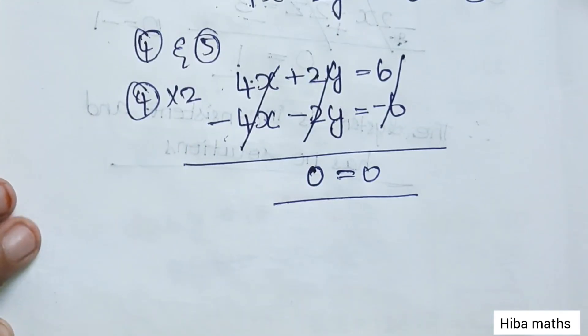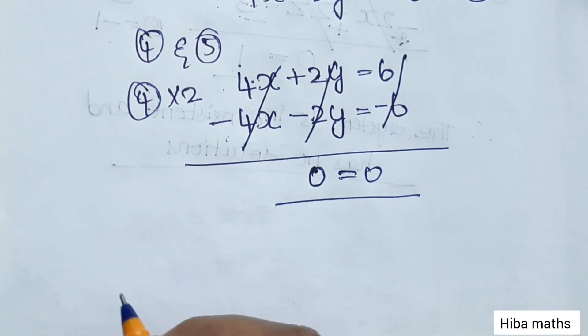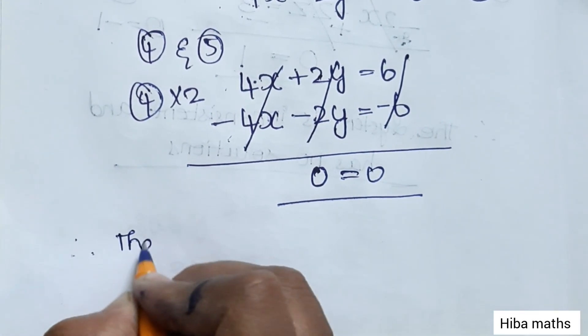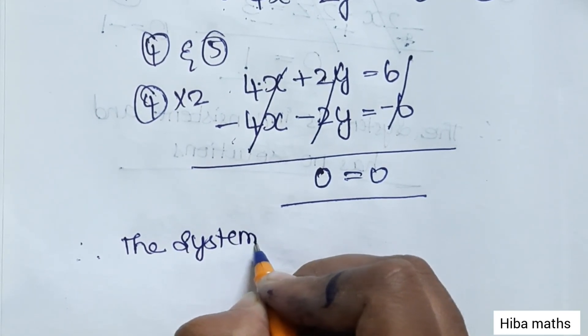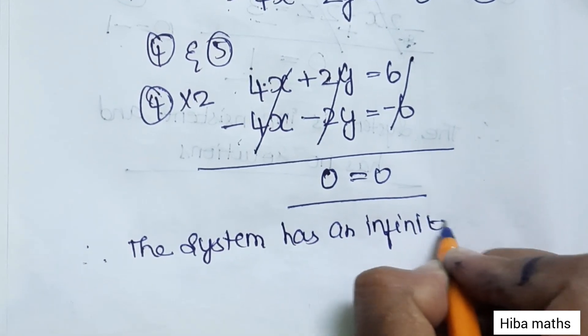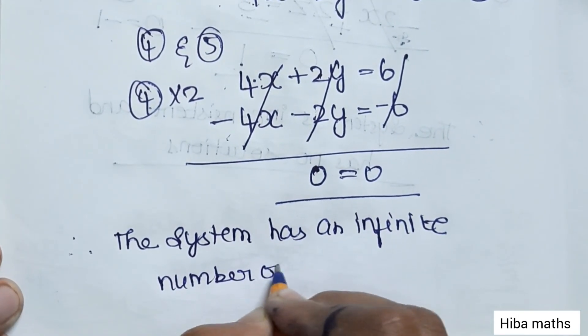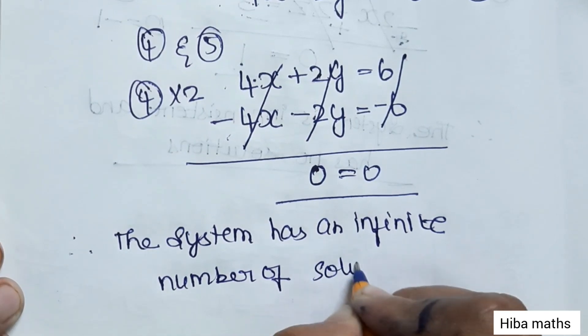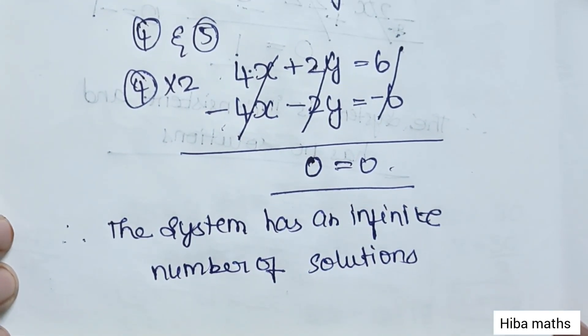The condition is 0 equals 0. Therefore, the system has an infinite number of solutions. 0 equals 0 means infinite number of solutions. Thank you so much for watching.